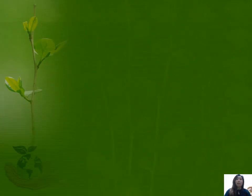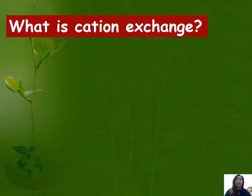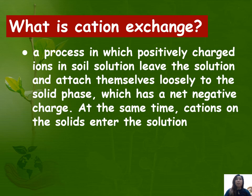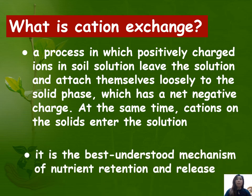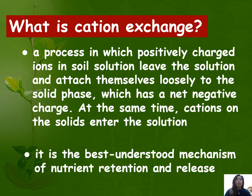Let us first discuss what is cation exchange. Cation exchange is a process in which positively charged ions in soil solution leave the solution and attach themselves loosely to the solid phase, which has a net negative charge. At the same time, cations on the solids enter the soil solution. This process is the best understood mechanism of nutrient retention and release for plant growth.